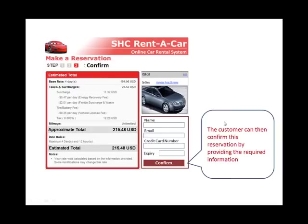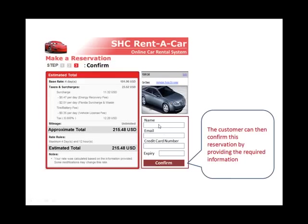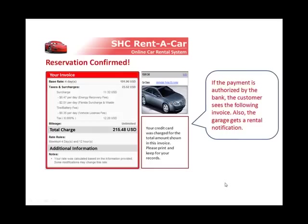This is a page that has both output and input — a lot of pages do that. If I want to continue, I can confirm my reservation. If I fill out my name, email, credit card number, and expiry date and confirm, then I'm giving something to the system. This would be represented as the customer reservation information. So I have a few pieces of data collected into one data flow called customer reservation info.